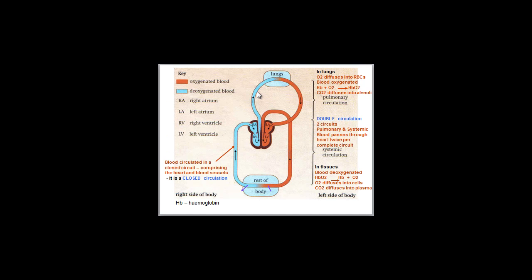Here's the plan of the mammalian circulatory system. A few key points to note: first, it is a closed circulation, and second, it's also a double circulation — so you've got your two circuits, your pulmonary and your systemic, meaning the blood passes through the heart twice per complete circuit.